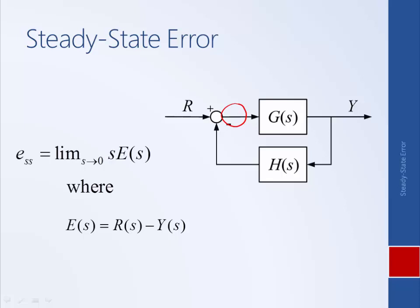In particular, it's not true because H(s) actually modifies the output. So this signal isn't actually R minus Y, it's R minus, in essence, a measurement of Y. And so if H(s) has dynamics, or H(s) has a steady state value that's not equal to 1, then this signal will be distorted and it won't be the true error.